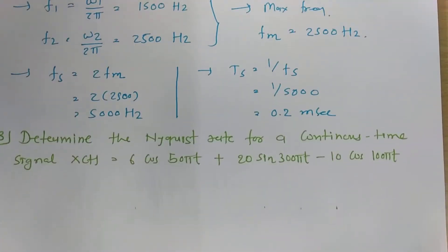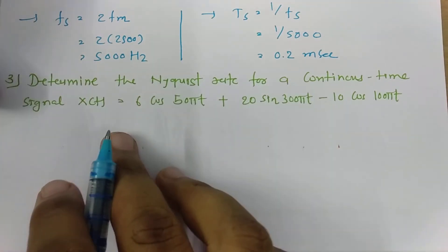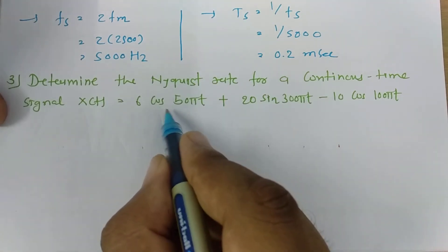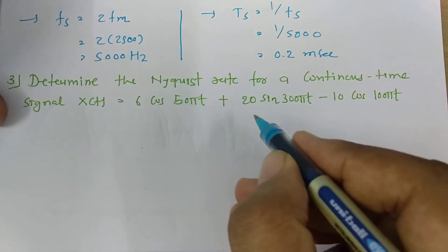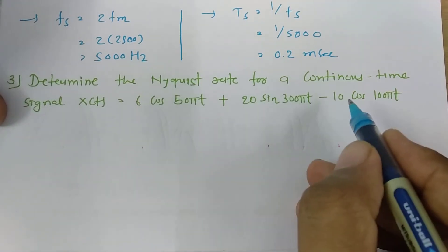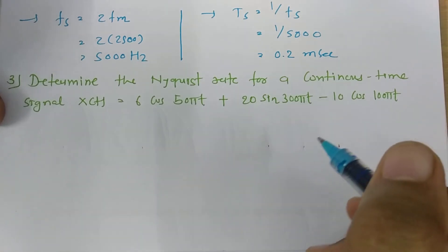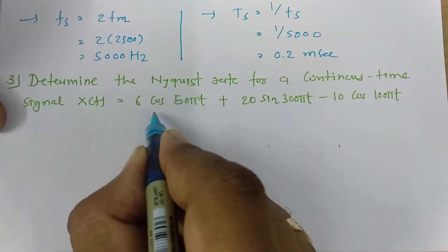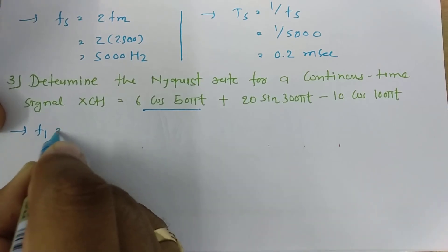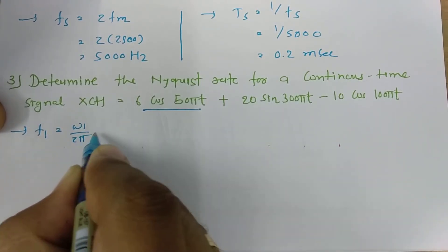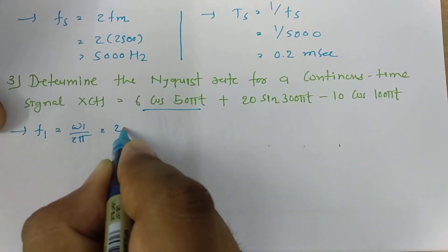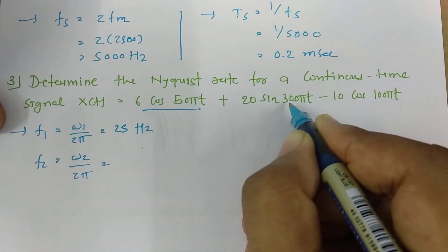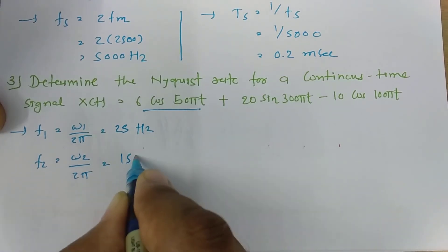The next question asks to determine the Nyquist rate for the continuous-time signal x(t) = 6cos(50πt) + 20sin(300πt) - 10cos(100πt). Identifying the frequency components: f₁ = ω₁/2π = 50π/2π = 25 Hz, and f₂ = ω₂/2π = 300π/2π = 150 Hz.